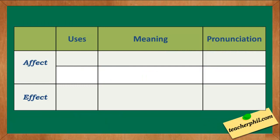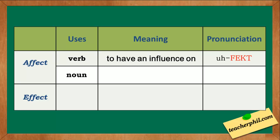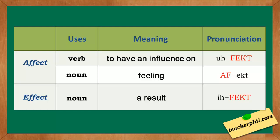Here's a table to help you understand more. Affect can be used as a verb and a noun. As a verb, it means to have an influence on, pronounced 'affect' with stress on the second syllable. As a noun, it means feeling or emotion, pronounced 'affect' with stress on the first syllable. Effect is commonly used as a noun, means a result, and is pronounced 'effect' with stress on the second syllable.